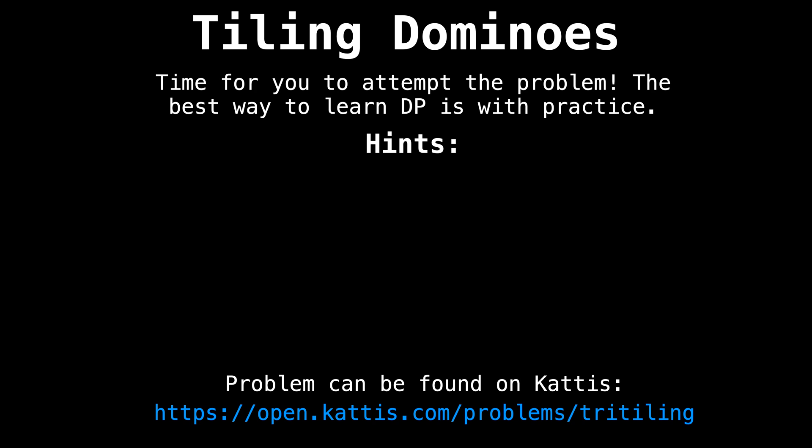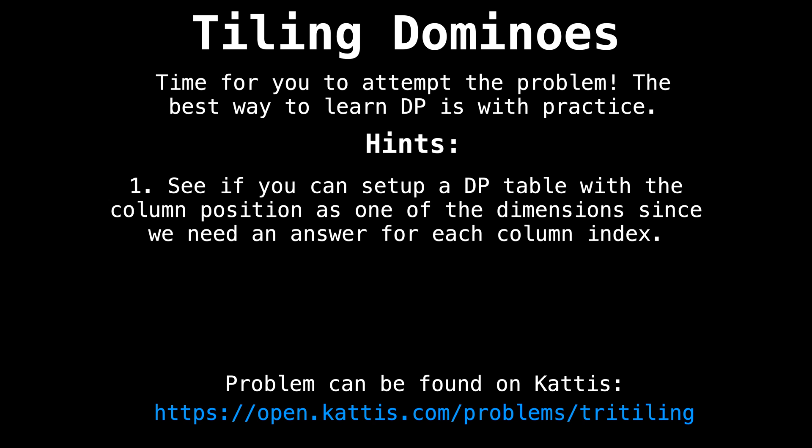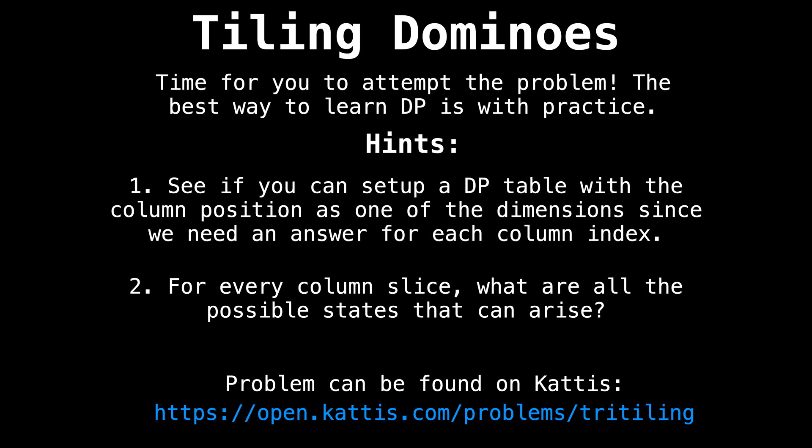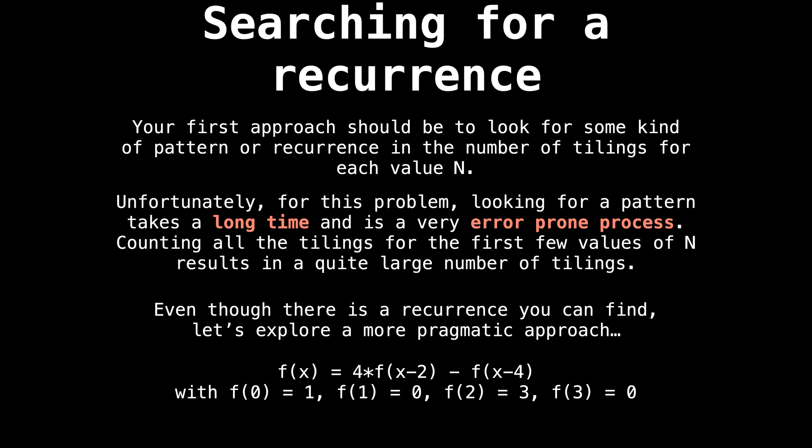If you get stuck, I have a few hints to help guide you in the right direction without spoiling the solution. My first hint is to see if you can set up a DP table with the column position as one of the dimensions, since we need an answer for each column index. My next hint is to think about all the possible states that can arise from one column slice. In your first attempt, it's always a good idea to look for some kind of pattern or recurrence for the total number of tilings for each value of n. Unfortunately, for this problem, looking for a pattern takes a long time and can be a very error-prone process.